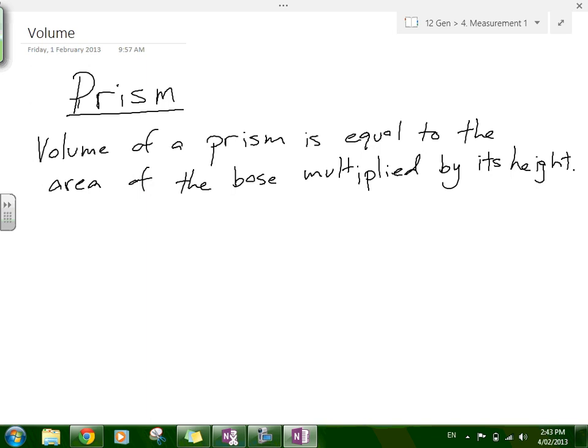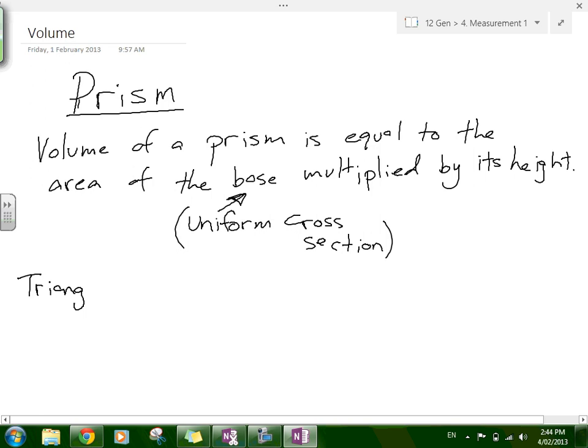The volume of a prism is equal to the area of the base multiplied by its height, or the uniform cross-section. Any prism - triangular, circular cylinder, rectangular - any shape you can work out the area of the base.